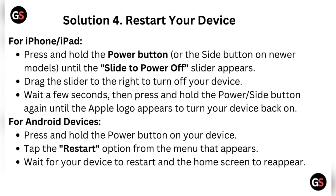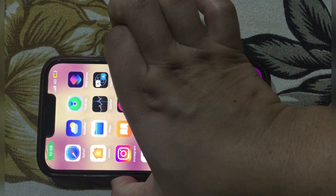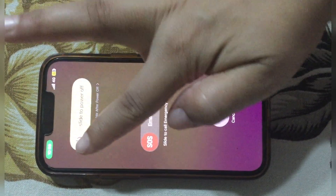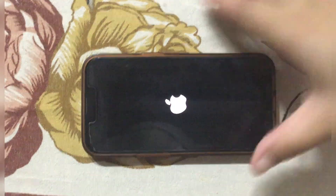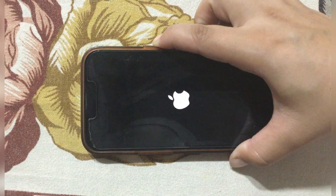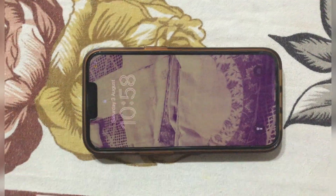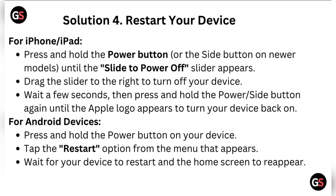Solution four: restart your device. For iPhone or iPad, press and hold the power button until the 'slide to power off' slider appears, then drag the slider to the right to turn off your device. Wait a few seconds, then press and hold the power button again until the Apple logo appears. For Android, press and hold the power button and tap the restart option from the menu that appears. Wait for the device to restart and the home screen to reappear.